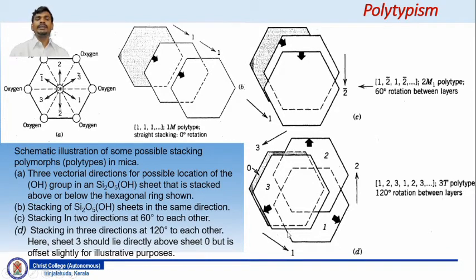In figure C, the stacking in two directions occurs at every 60 degrees to each other; the vectors are represented by 1 and bar 2. Try to locate in figure A the location of vector 1 and bar 2, which is found at the southeast quadrant. Here you can have stacking of 1, bar 2, 1, bar 2, like that. Si2O5(OH) sheets stacking in a pattern of 1, bar 2, 1, bar 2 as indicated by the vector direction. The polytype shows 60-degree rotation between the layers, and you have a monoclinic polytype.